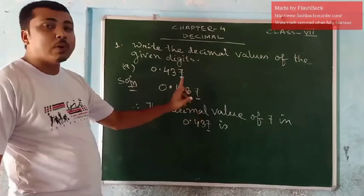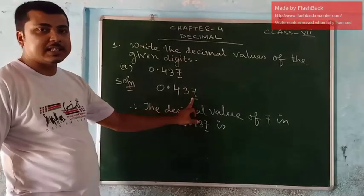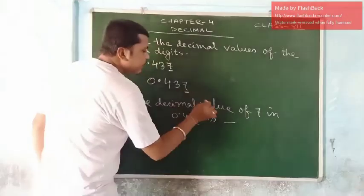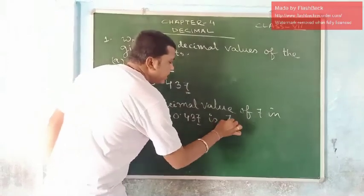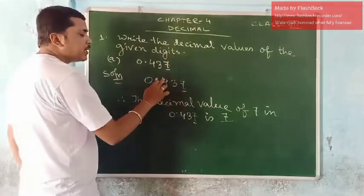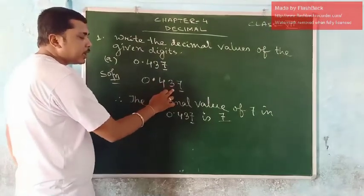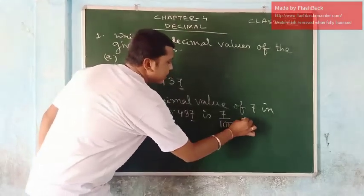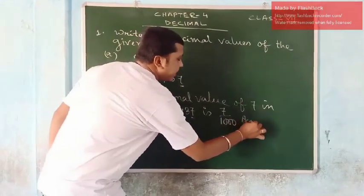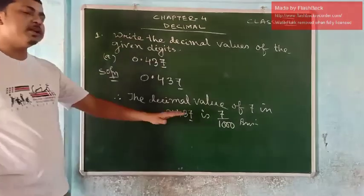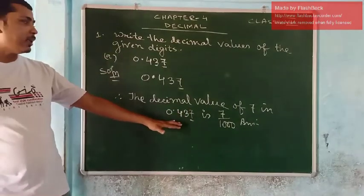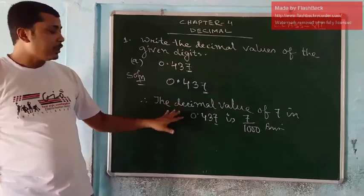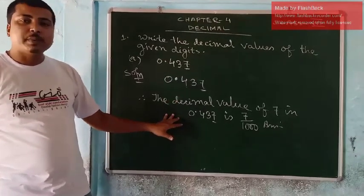So 1000 is written as 1 by 1000, as I showed you earlier. This 7 is in the thousandths place — ones, tens, hundreds, thousands — so this 1000 will be written here. So the answer will be 7 by 1000. Hope you have understood this. The remaining parts B, C, and D — I think you can do by yourself.